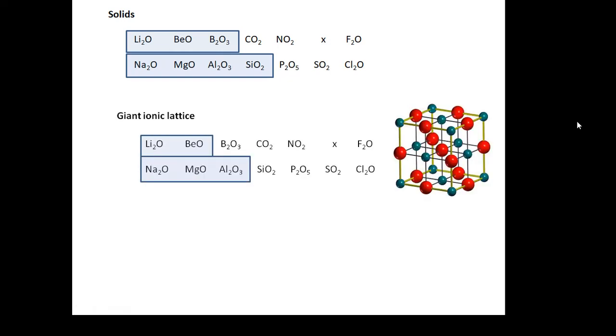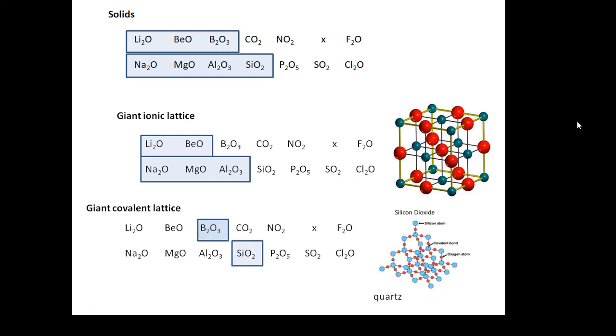Most of them are a giant ionic lattice. We talked about this when we did ionic compounds, a giant ionic lattice. Some of them, some of them are a little bit weird. They are a giant covalent lattice. So a giant lattice but held together by covalent bonds. For example, silicon dioxide is quartz, or think about glass. Silicon dioxide, those two are a giant covalent lattice. Most of them are giant ionic lattices.